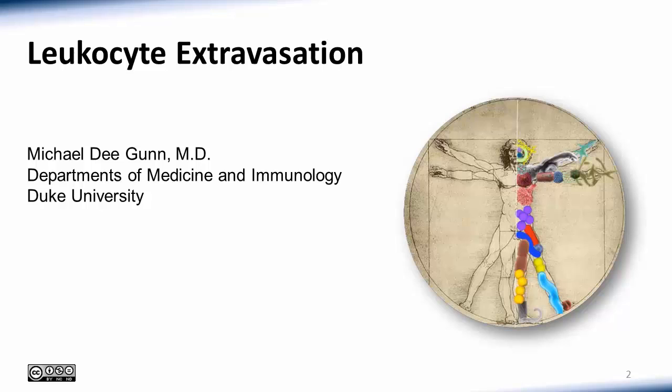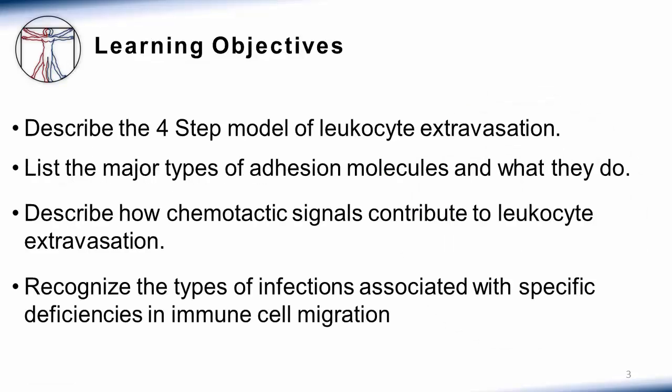Hello, I'm Dr. Michael Gunn from Duke University. Today we're going to talk about how immune cells get out of the blood and into tissues. After this lecture, you should understand the current model of leukocyte extravasation, or how white blood cells get out of the blood and into tissues, be able to identify the major types of adhesion molecules, understand the role of chemotactic signals in this process, and recognize how defects in this system lead to specific infections.